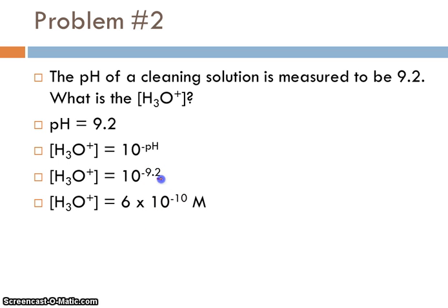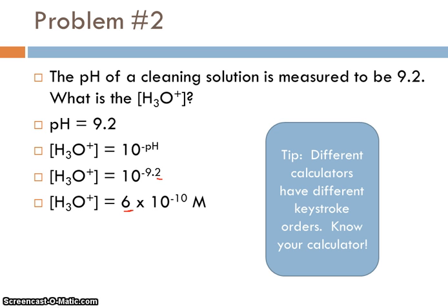Remember, 9.2 only has one digit after the decimal. I'm only allowed one sig fig in my answer. The other thing I want to point out, where students sometimes get tripped up, is that different calculators have you enter things in different orders. They have you do the keystrokes in different sequences. You need to know your calculator. Do you need to do 10 and then the negative pH? Do you do negative pH and then the exponential thing? Know your calculator. Practice and make sure you get the right answer.